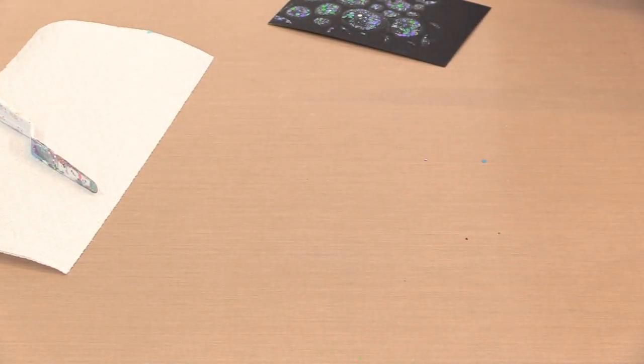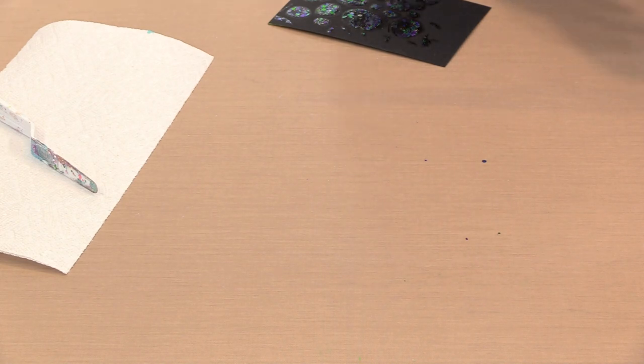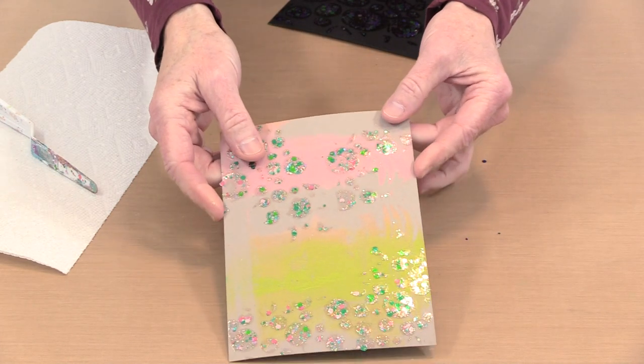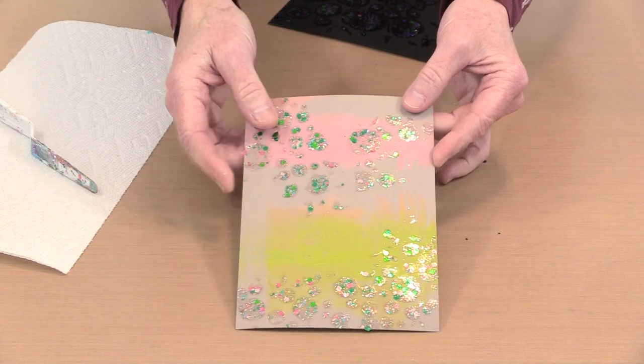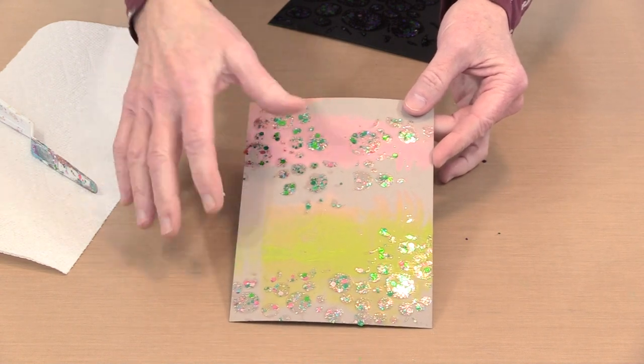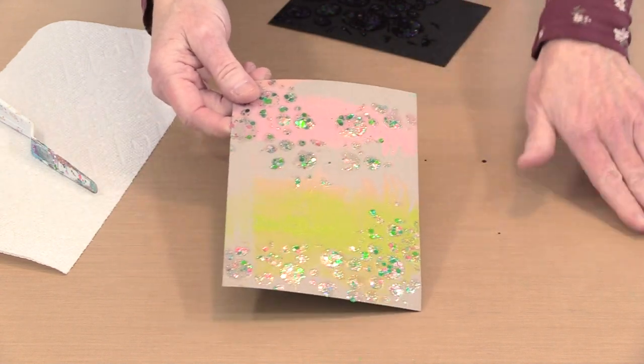Here's a better example. So this was done with that Bubble Blast stencil. And here you can really see the shapes a little bit more because the background is not so busy that it's taking away.